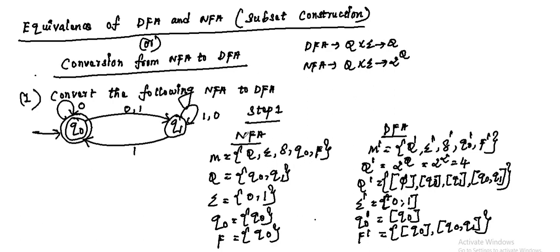These are the 5 tuples in non-deterministic finite automata, whereas deterministic finite automata is denoted by M dash equal to Q dash, sigma dash, del dash, Q0 dash, F dash. Coming to the NFA, here Q is a set of states. In this transition diagram, Q0 and Q1 are 2 states, so Q equals {Q0, Q1}. The inputs are 0 and 1, so sigma equals {0, 1}. The starting state and final state are both Q0, so Q0 equals Q0 and final state F equals Q0.